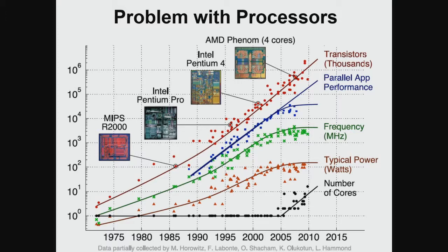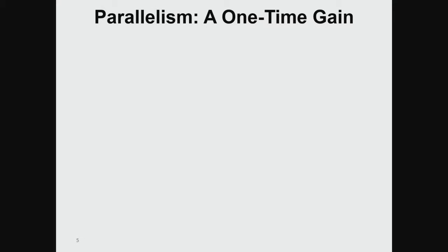Added performance came by increasing the number of cores and extracting parallelism from them. What we're seeing now in very recent general processors is that the performance of parallel applications has been flattening out. So we are stuck — we need something else. This parallelism has been a one-time gain, unfortunately.